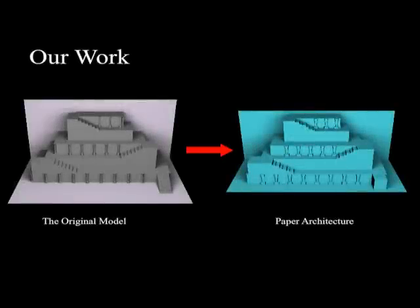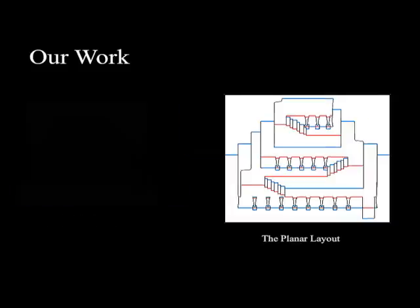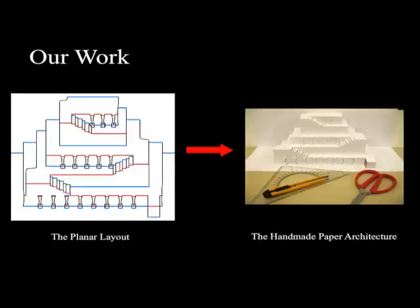In this paper we automatically generate paper architecture. The input to our method is a 3D model with a user assigned ground plane and backdrop plane. The output is a pop-up realizable piecewise linear surface that approximates the input model and is guaranteed to be manufacturable.